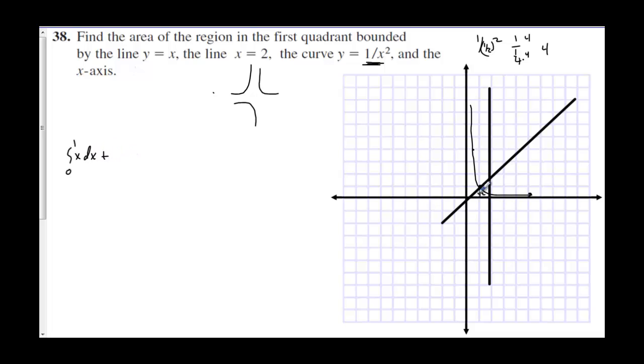And then we have the second region right here is under 1 over x squared. And that's from 1 to 2. So we have the integral from 1 to 2 of 1 over x squared dx.